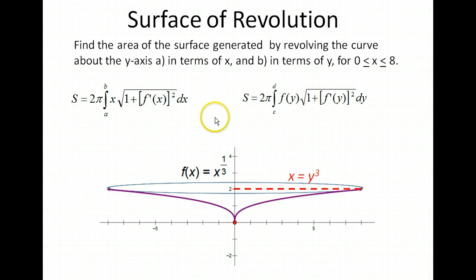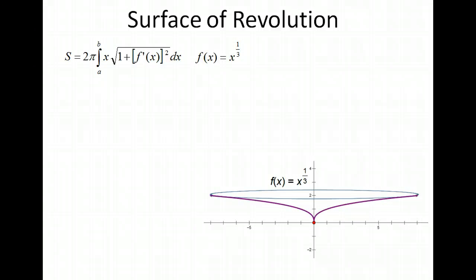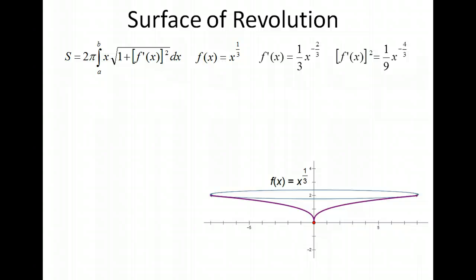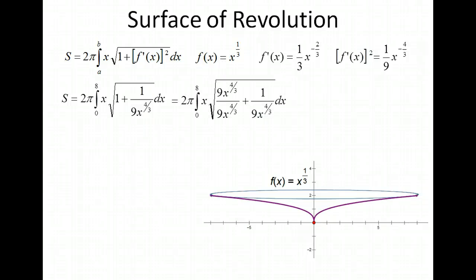For this particular problem, we're going to do both so you can see they come out to exactly the same value. Let's find our surface area using the formula in terms of x. Our function is x to the 1/3, and we take the first derivative, getting 1/3 x to the negative 2/3. We square that to get 1/9 x to the negative 4/3. Now we plug in to our formula, replacing f prime of x squared with 1 over 9x to the 4/3. To integrate this, we'll find a common denominator, which is 9x to the 4/3, and bring the two fractions together — giving us 9x to the 4/3 plus 1, all over 9x to the 4/3 under the radical.